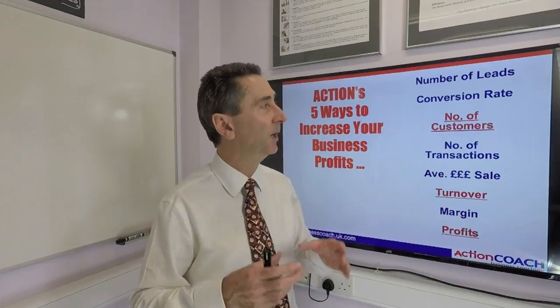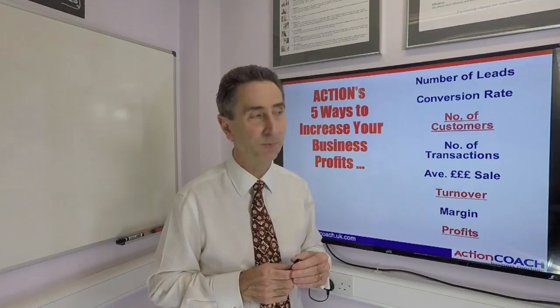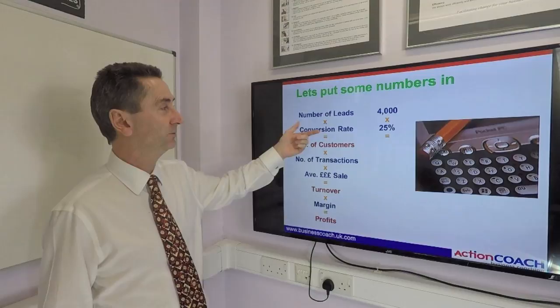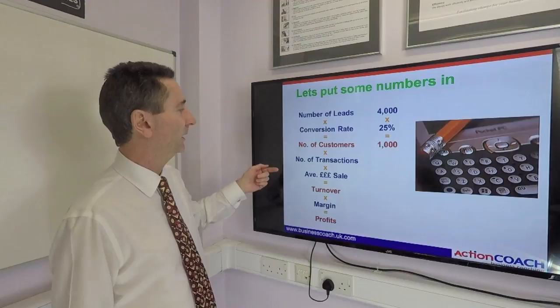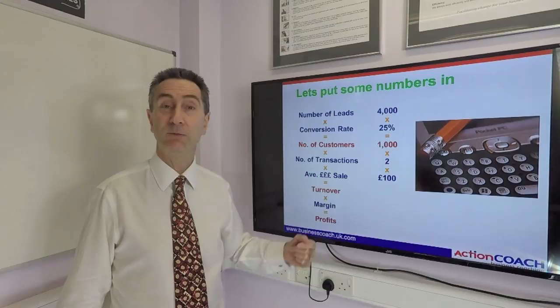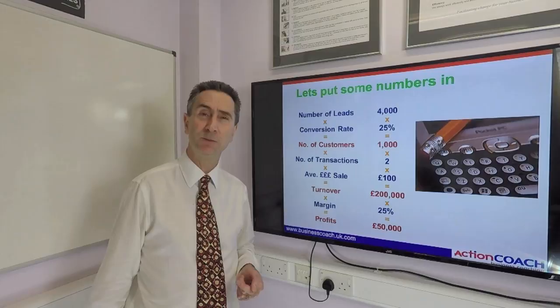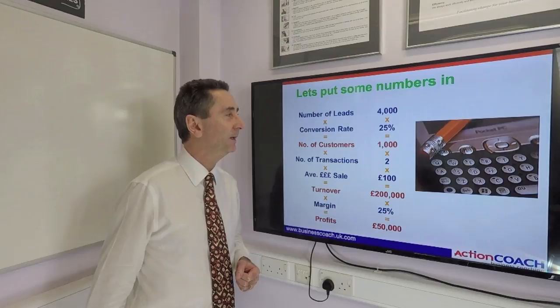We can look at those individually and work on them to grow the actual figures. Let's put some numbers in. A small business gets 4,000 leads per year with a conversion rate of 25%, giving 1,000 customers. Each customer buys on average two times a year, spending £100 on average — a turnover of £200,000. With a margin of 25%, the profitability is £50,000. A very nice little business.